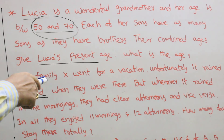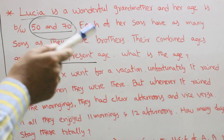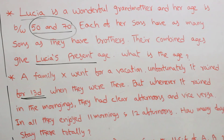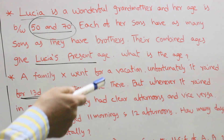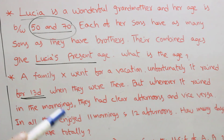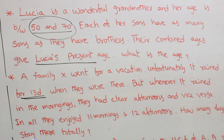A family X went for a vacation. Unfortunately, it rained for 13 days when they were there. But whenever it rained in the mornings, they had clear afternoons and vice versa. If they enjoyed 11 mornings and 12 afternoons, how many days did they stay in total?